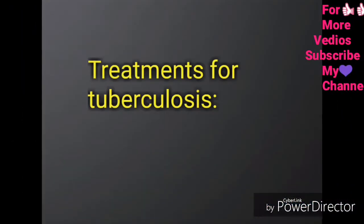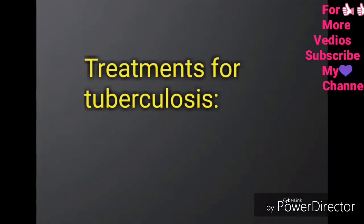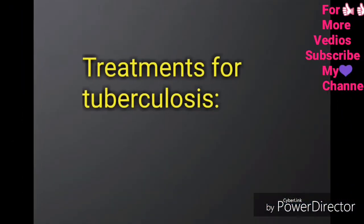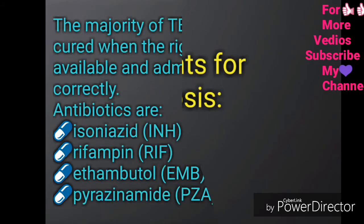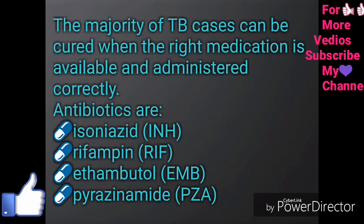Treatments for tuberculosis. The majority of TB cases can be cured when the right medication is available and administered correctly. Antibiotics used include Isoniazid, Rifampicin, Pyrazinamide, Ethambutol, and Streptomycin.